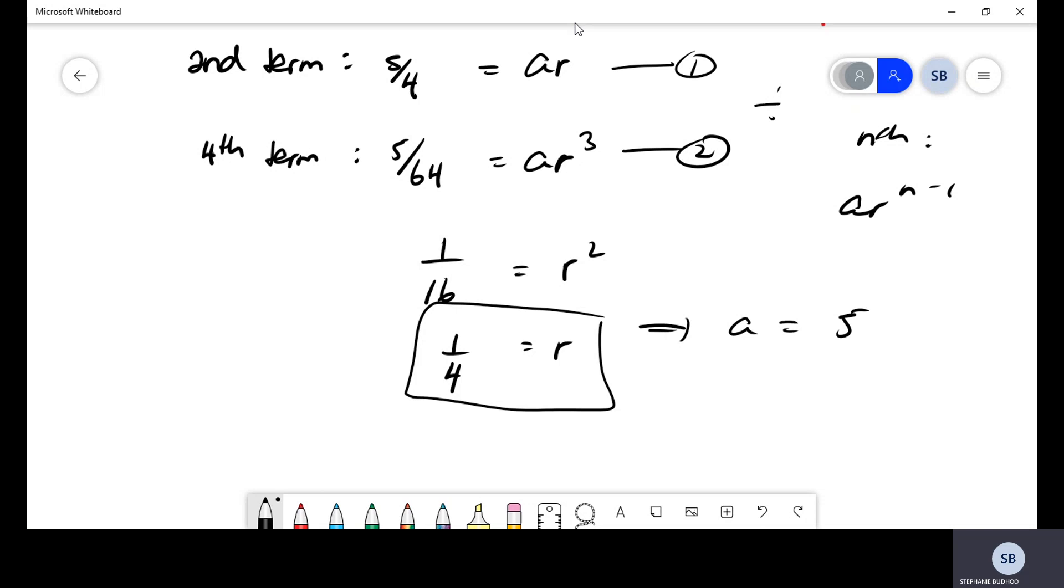But generally, when you are dealing with simultaneous equations in a GP, they tend to give you the values of various terms and you just have to equate them to the nth term formula. And you can use that to find the common ratio. You can use it to find A. Sometimes they can ask you after a question like this, what's the seventh term? Well, term 7 will just be given by AR to the power of 6. And you have the value of A and you have the value of R. So you can just simply go ahead and substitute your values.